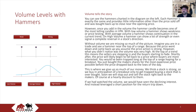Imagine you're in a trade and see a hammer near the top of a range. Because the price went down and came back up, you assume the price action is strong. However, what you didn't notice was the volume was very high. At the top of a trend, this means the sellers are stepping in and the buyers are starting to fade. Shortly after, the price will likely begin to fall back to a price where the buyers are more interested. You would have been trapped long at the top of a range hoping for a breakout — you just bought the makers' shares for the most expensive price possible before the price dropped back to the lows of the day. This is where we are giving up so much of our money. We think a stock is strong, so we buy in anticipation of a breakout, only to get trapped buying a stock that is overbought. Soon we will stop out and sell the stock right back to the makers — at a hearty discount for them.